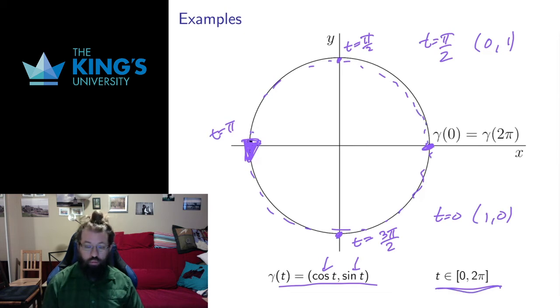Again, if my t was from 0 to 4π, I would just keep going around the circle another time, and I could keep doing that as often as I wished.